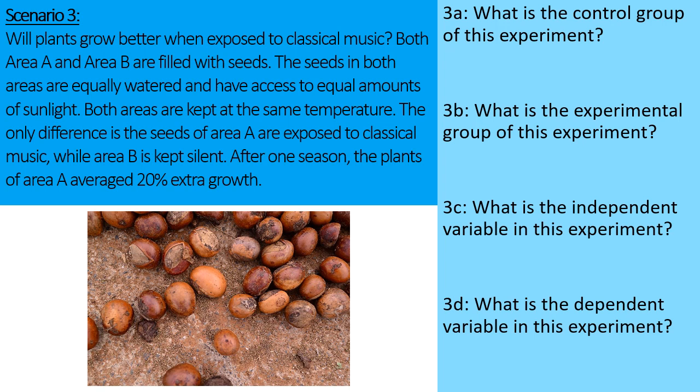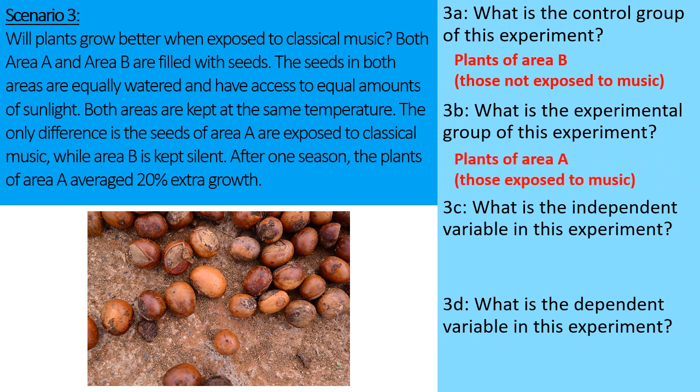Part A, what is the control group? That's the plants of area B — those not exposed to music. Part B, what is the experimental group? That's the plants of area A, the plants that were exposed to music.